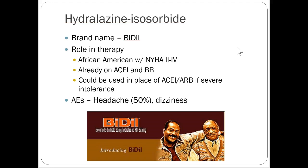Hydralazine-isosorbide, brand name Bidil, has a role in therapy for African-American patients with New York Heart Association Class 2 to 4 who are already on an ACE inhibitor and beta blocker — it can be added on to improve symptoms. It can also be used in place of an ACE inhibitor for severe intolerance. It could potentially be used for non-African-American patients, but there's not much evidence to support that — the evidence base is much stronger for the African-American patient population.